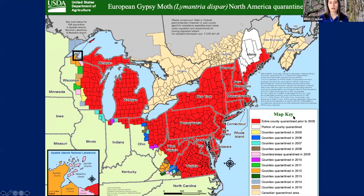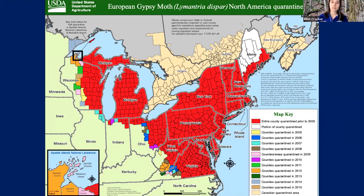Gypsy moth has been here for a while and you've probably heard people talk about it before. I think that can lead to some complacency — it must not be a big problem because it's been here since the 1800s and it hasn't reached me yet. Gypsy moth will feed on a wide range of plants, but it especially likes oaks and is most damaging to oaks. If you think about the potential area it could impact, there's a lot of risk area that has not been affected yet. This is a map of where it currently is — all the colors have gypsy moth established and are under quarantine.